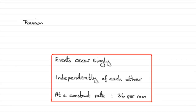The answer to the first question is that it's a Poisson distribution because we have the following conditions that are met. For a Poisson distribution, events must occur singly, independently of each other, and at a constant rate. Well, they do occur singly, and we can assume that the flow of traffic is independent of one another, and it does occur at a constant rate.